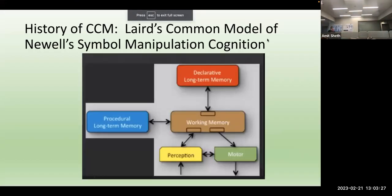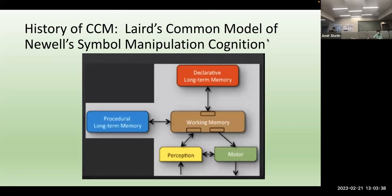We were organizing things around this computational cognitive model notion and these general components: declarative knowledge, which is more or less what you might think of as a knowledge graph; procedural knowledge; perception and motor — what we talked about last time — and all of these feed into something called working memory, which is sort of the scratch pad for where you are doing your thinking.